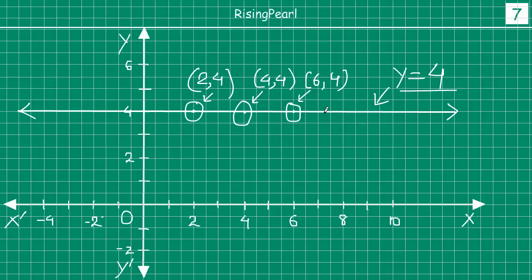You can take any point dosto. At this point, or at this point, or at this point. At any point, each and every point, you will notice that this is actually 4 units away from x axis.